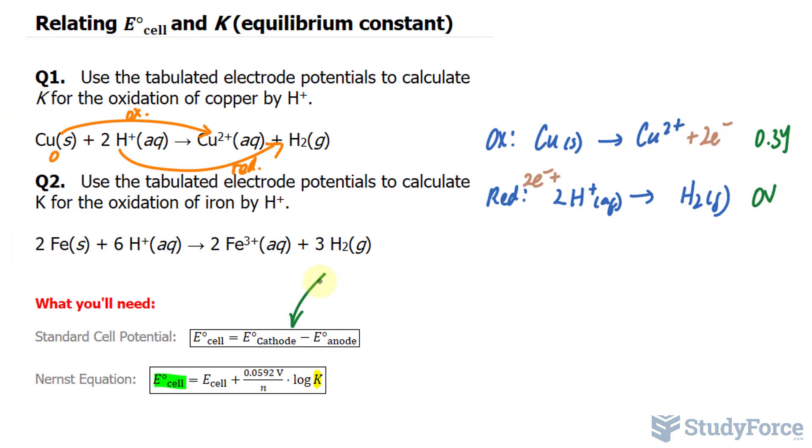I'll be using this formula to calculate the standard cell potential, so I'll subtract that of the anode from the cathode. So E cell is equal to—the cathode is always the reduction reaction,